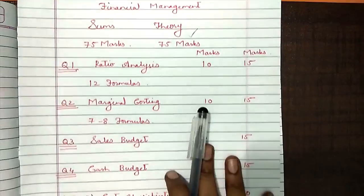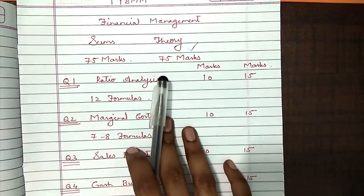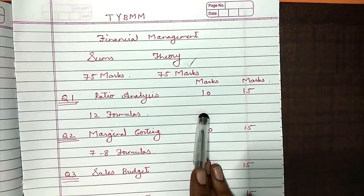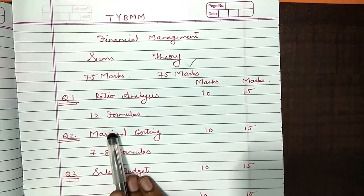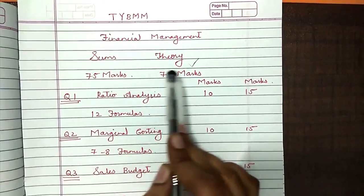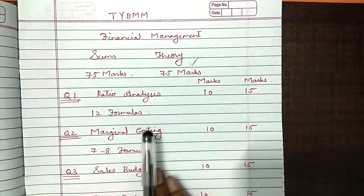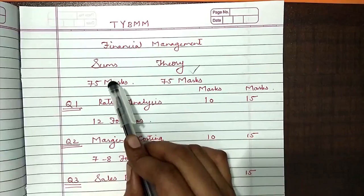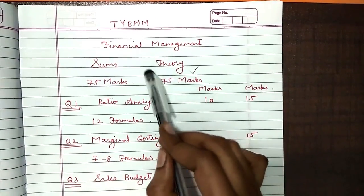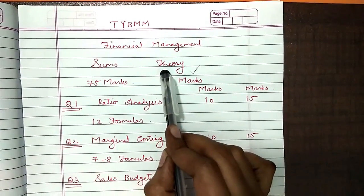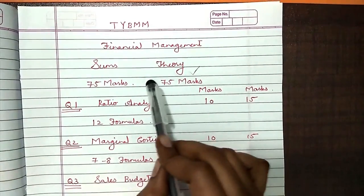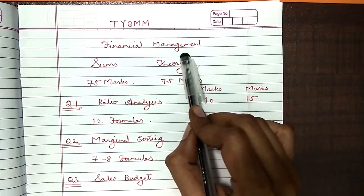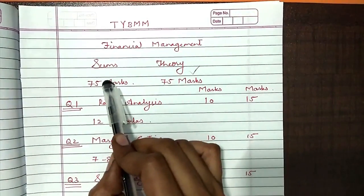What is the meaning of smart studies? Smart studies means we are not going to study the entire textbook — we are just going to study whatever is important from your exam point of view. This subject has 100% internal option, meaning you can write the entire paper with sums or 100% with theory. But since we are the smart generation, we are not going to study even a single line of theory — we are just going to concentrate on the sums.